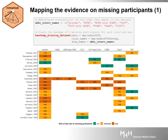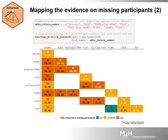We will use the heatmap_missing_dataset function to view the missing participants in percent in the dataset. You can see that most trials have interventions with high level of missingness, judging by the reddish color, with only a few trials having zero or low missingness rate shown in green. Next, we use the heatmap_missing_network function to view the median rates of missing participants in percent for each intervention on the main diagonal, and observed comparisons in the lower off-diagonal.